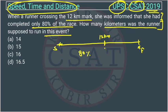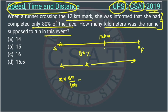So, how many kilometers was the runner supposed to run? Suppose the total distance is x kilometers. Then 80 percent of x is equal to 12 km, because from the start to the 12 km mark the distance is 12 km. So 80 percent of some distance x equals 12.